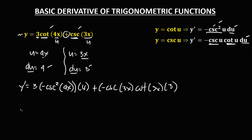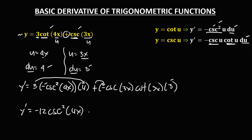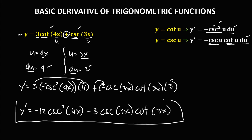Simplifying, we have y' equals — 3 times 4 is 12, and we have this negative, so that's −12·csc²(4x). Then the positive and negative gives negative, and we have 3, so that's −3·csc(3x)·cot(3x). So this is now the derivative.